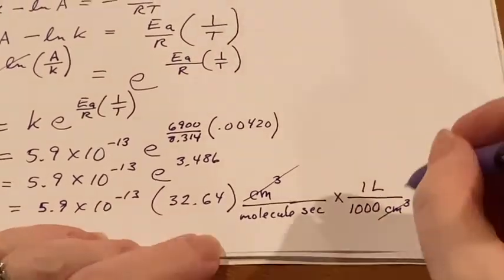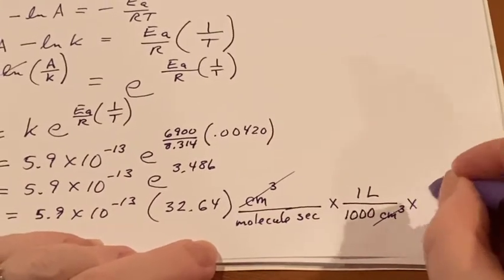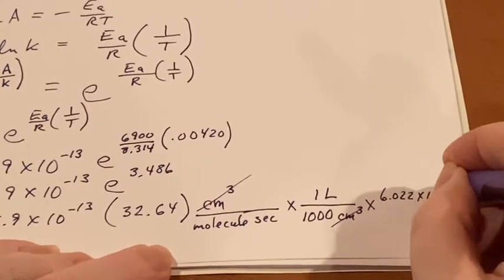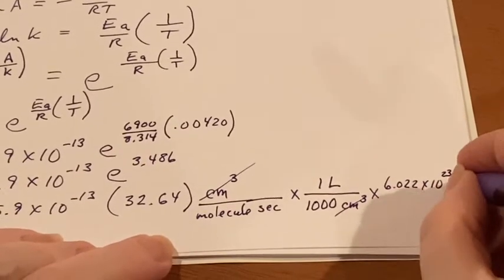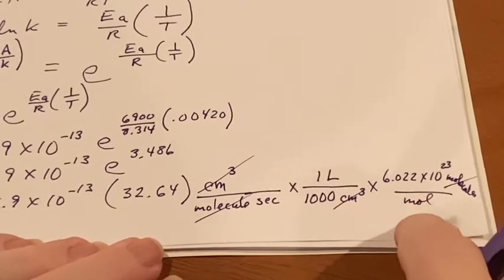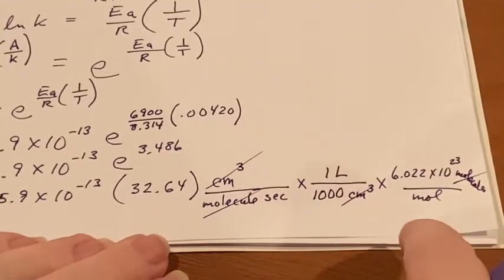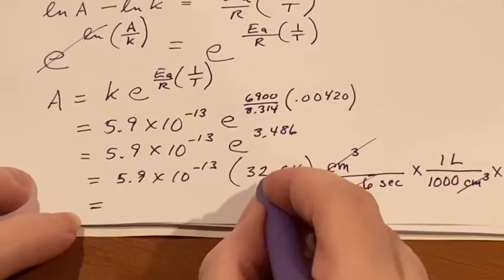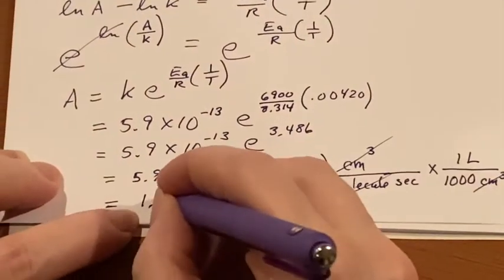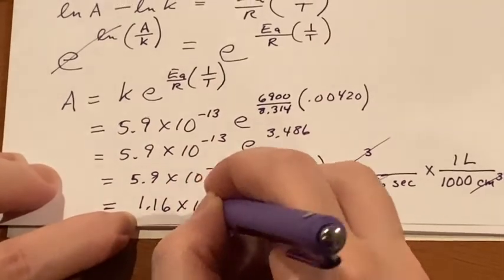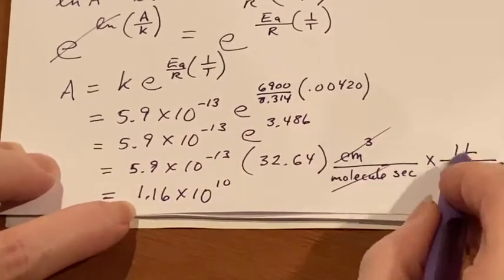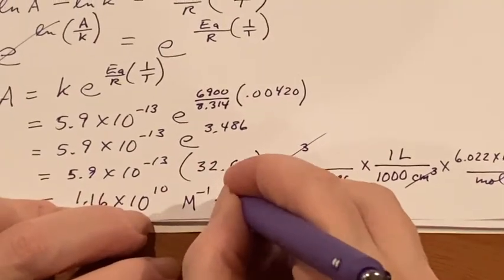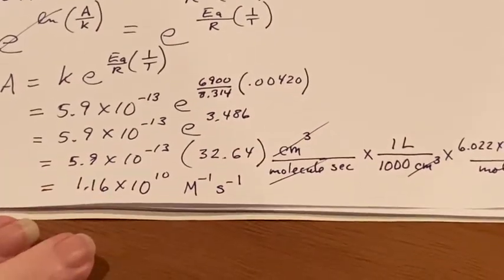And I can also use Avogadro's number: 6.022 times 10 to the 23rd molecules in a mole. And now I can see moles per liter would be molarity. This is upside down, so this is going to be inverse moles. I can multiply these together: 1.16 times 10 to the 10th by the time you get through all of this.